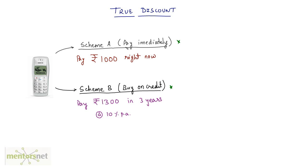Scheme A says that if you pay immediately rupees 1000, you can take this mobile — it's all yours. Scheme B says that you can buy this mobile phone on credit, that is on loan, and you'll have to pay 1300 rupees in three years at the rate of 10% per annum. So 1300 is the amount in Scheme B.